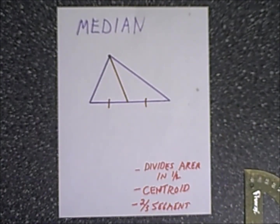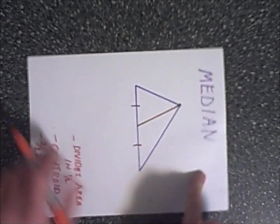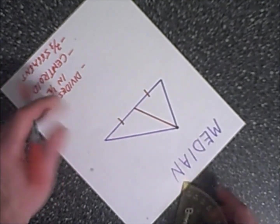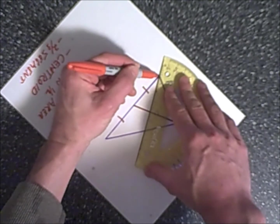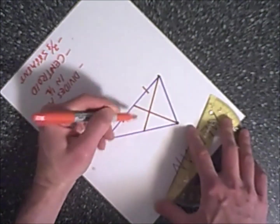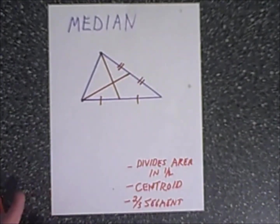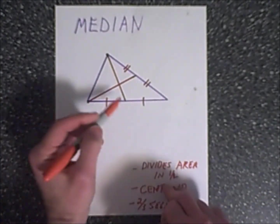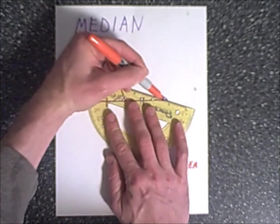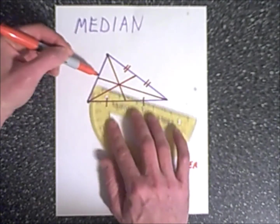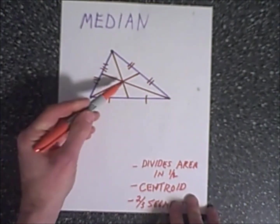For every triangle there are three medians. Sometimes I like to turn the paper over to get a better drawing. We draw from the vertex to the midpoint of the opposite side — these two are congruent. Then the third vertex and its median: all three will intersect somewhere inside the triangle, and this is called the point of concurrency.